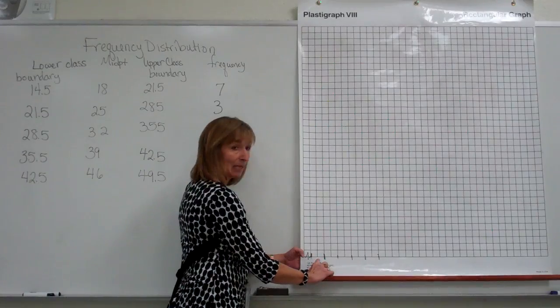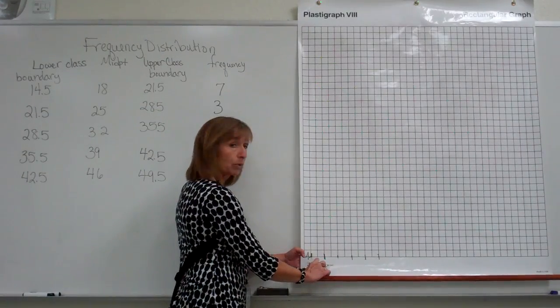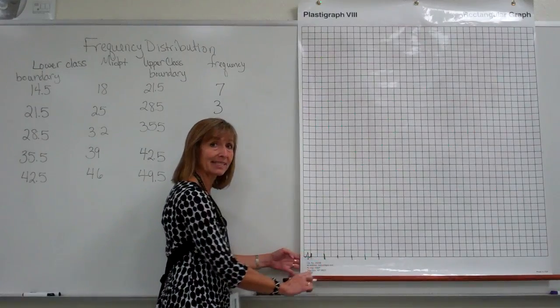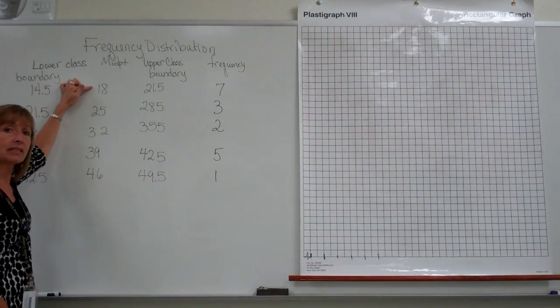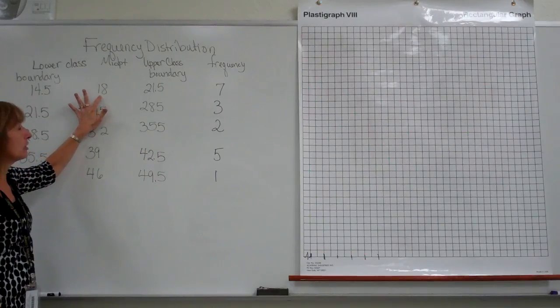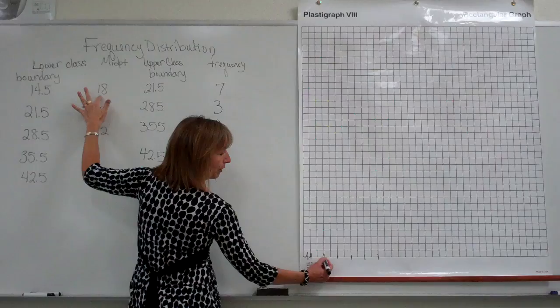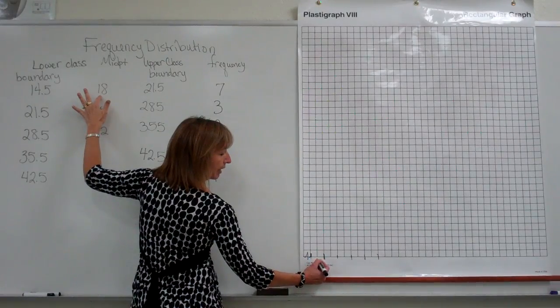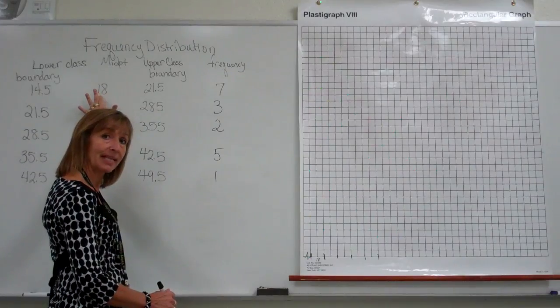And I'm going to label the midpoints halfway between the beginning and the end of the bar with the midpoint we have for each class. So I have also written down the midpoints from that previous video clip. The first class midpoint is 18. So right halfway between where I'm going to do this bar, I'm going to write the number 18 down as a label along the horizontal axis.